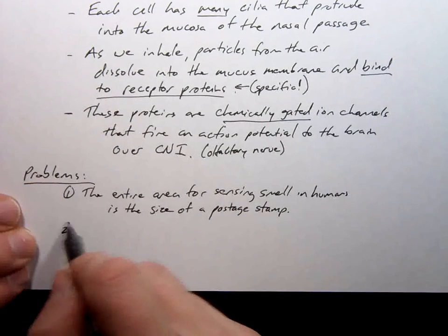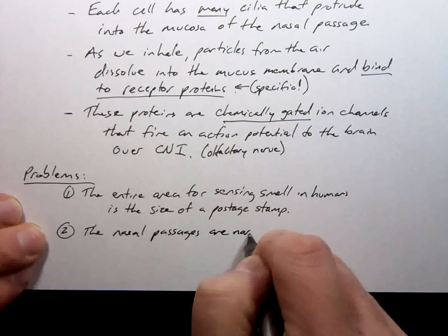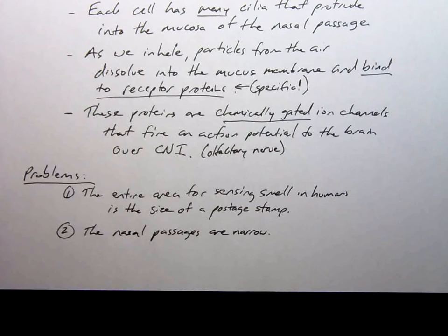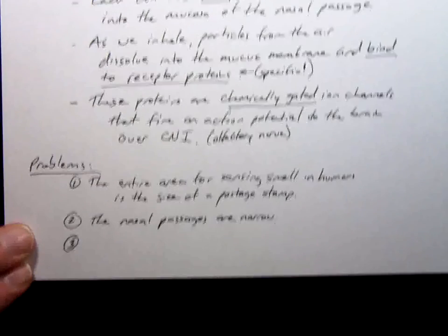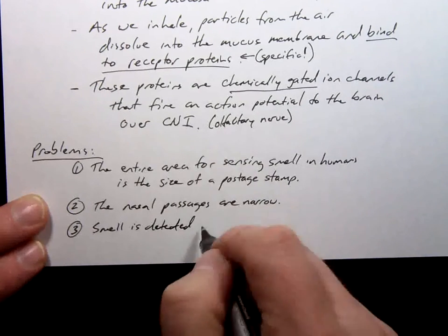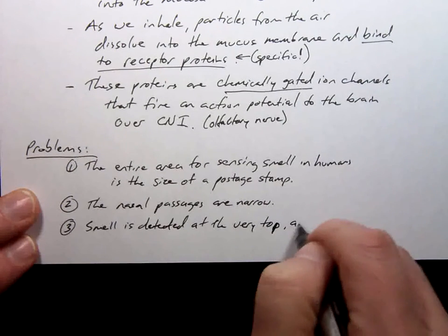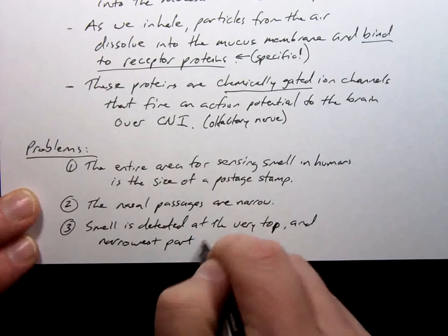The second problem is this: The nasal passages are narrow. By the time you cover that with mucous membranes and tissues and if those tissues become swollen or the septum is deviated, there is not a ton of room for that to pass through. The last problem is that smell is detected at the very top and narrowest part of our nasal passage.